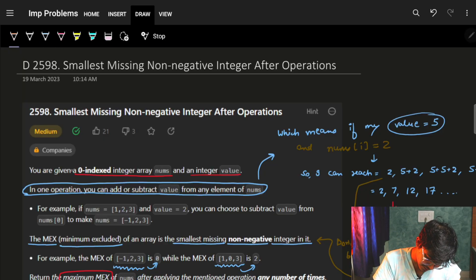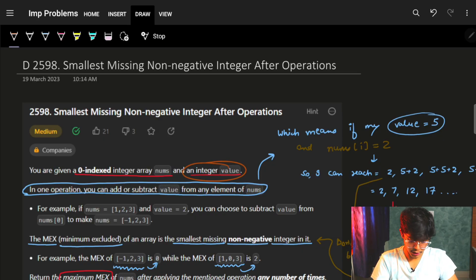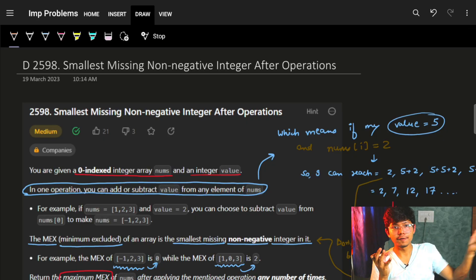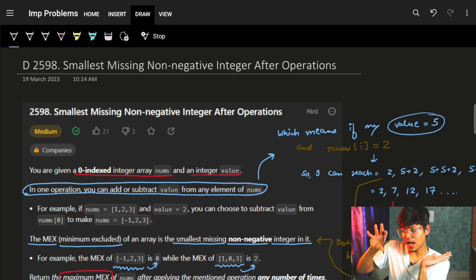It says that we are given a zero-indexed integer array called nums and an integer called value. What it says is that in one operation you can add or subtract value which is given to us from an element of nums.